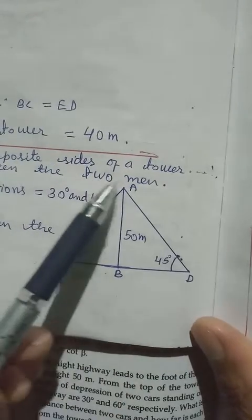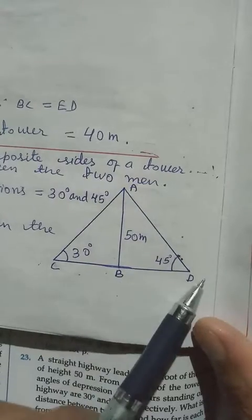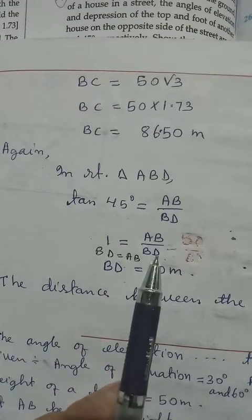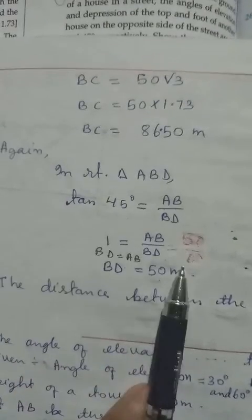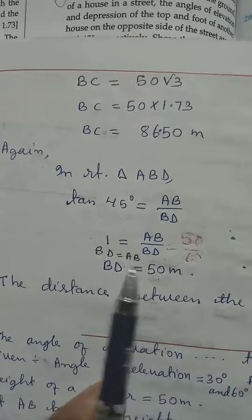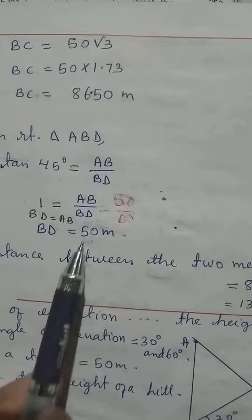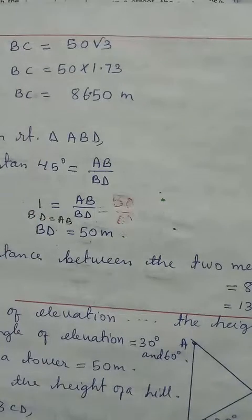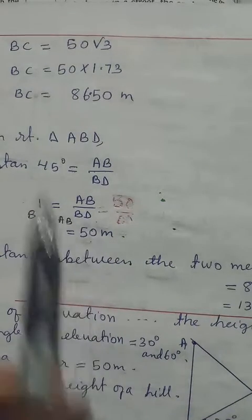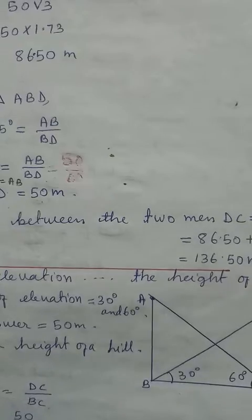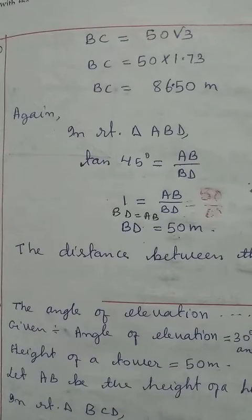Now taking the other triangle with 45°: tan 45° = AB by BD. AB is already known as 50. From the table, tan 45° = 1. Cross multiplying: AB = BD, so BD = 50. The distance between the two men is 50 + 86.50 = 136.5 meters. Let's continue to the next question.